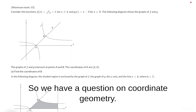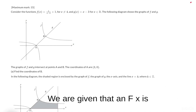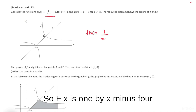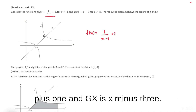We have a question on coordinate geometry. We are given that f(x) is 1/(x-4) + 1 and g(x) is x - 3.